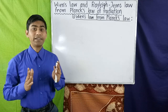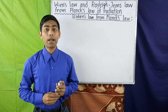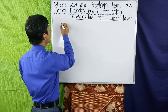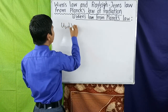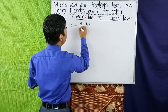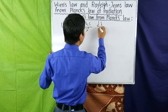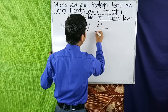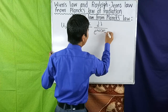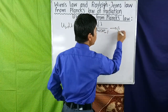Now, in terms of wavelength, Planck's law for blackbody radiation can be written as: u(λ) dλ = (8πhc / λ⁵) × dλ / (e^(hc/λkT) − 1). Suppose this is equation 1.